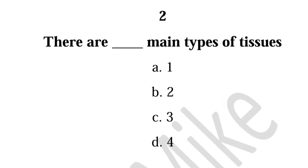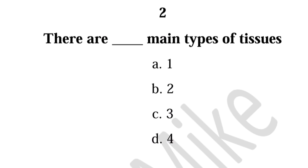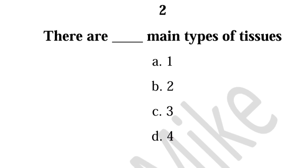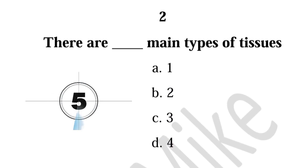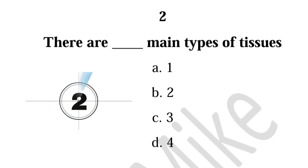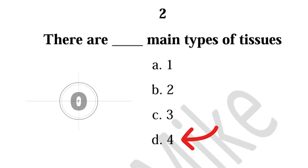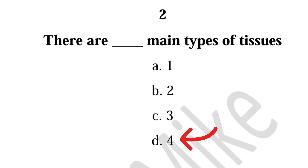Number two, there are dash main types of tissues. Four types.